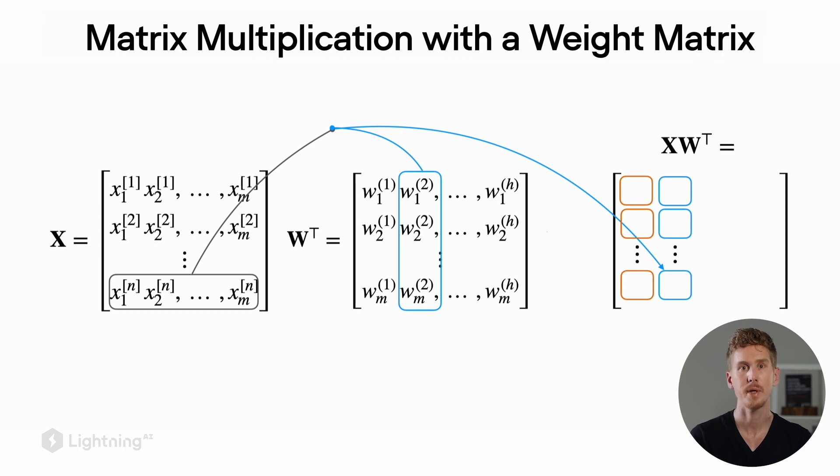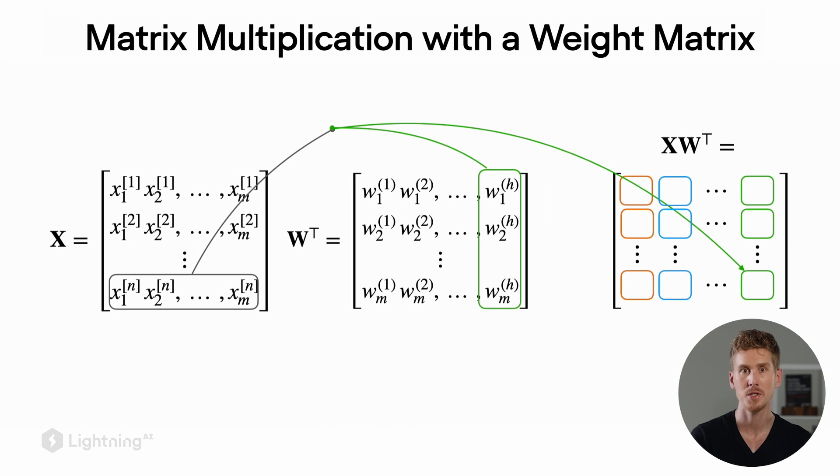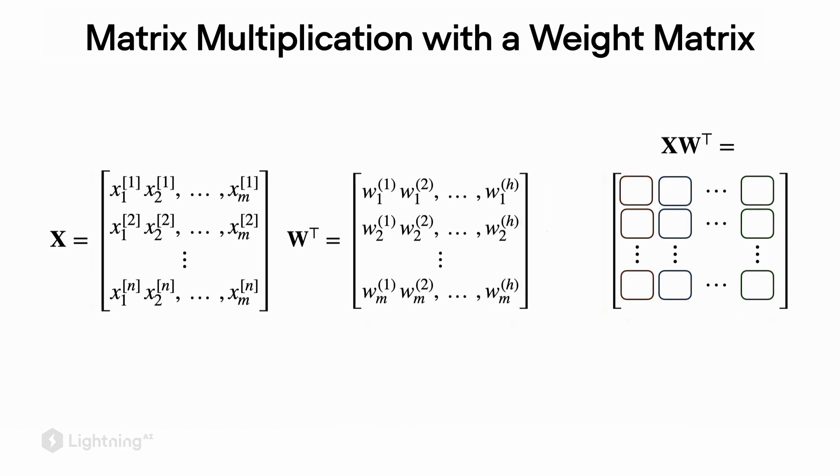We keep doing that until we covered all possible dot product combinations between the input matrix X and the weight matrix W. As a result, the output matrix will have the same number of rows as the input matrix and the same number of columns as the weight matrix.